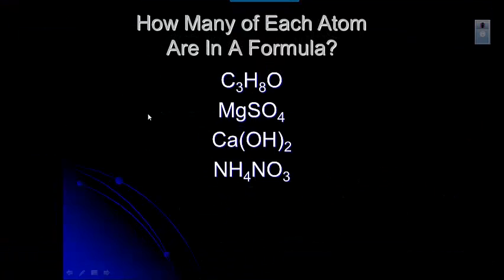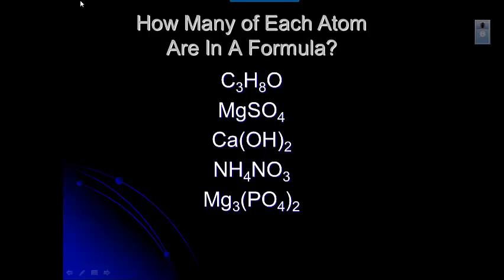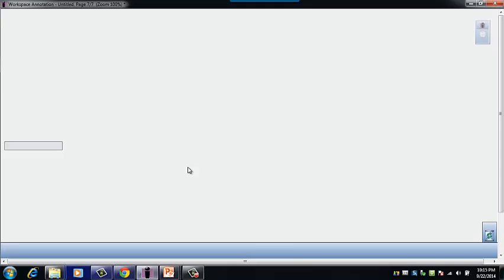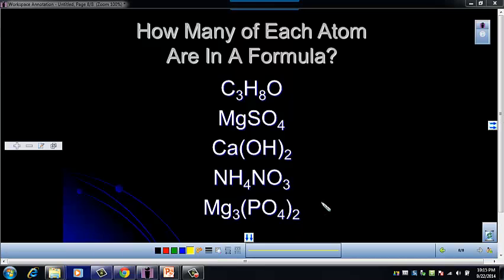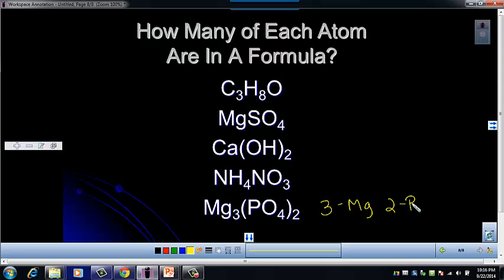A couple more. In this formula, you have three magnesiums, two phosphoruses — because that two applies to the P and the O — and then a total of eight oxygens because two times four is eight.